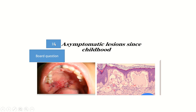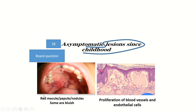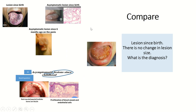Another board question: an asymptomatic lesion since childhood. There are red papules and nodules, some bluish. Histopathology shows proliferation of blood vessels and endothelial cells, indicative of hemangioma of infancy. The important clue in the history is onset since childhood — not at birth. Comparing lymphangioma circumscriptum, angiokeratoma, and hemangioma of infancy.